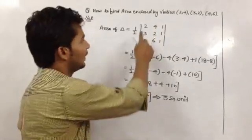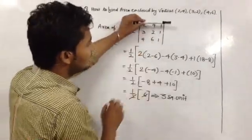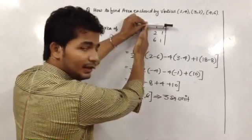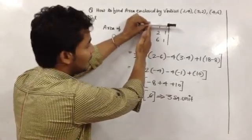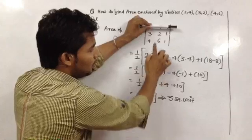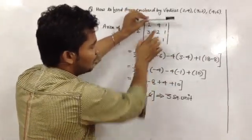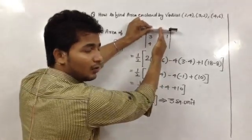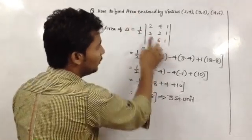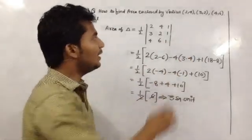2, hide this and this and multiply remaining: 2 into 1 is 2, 6 into 1 is 6. Now minus 4 and hide second column: 3 into 1 is 3 and 4 into 1 is 4. Similarly,